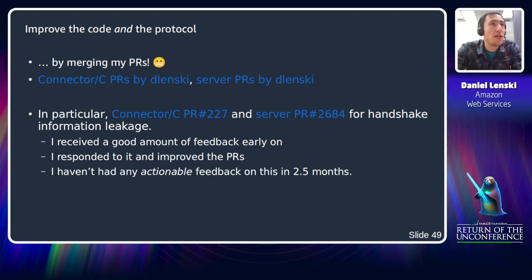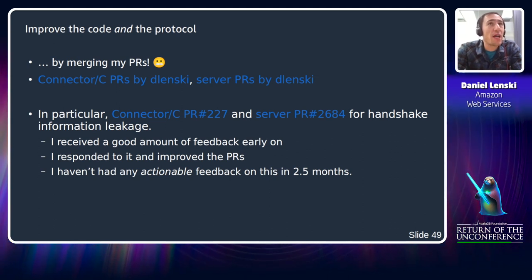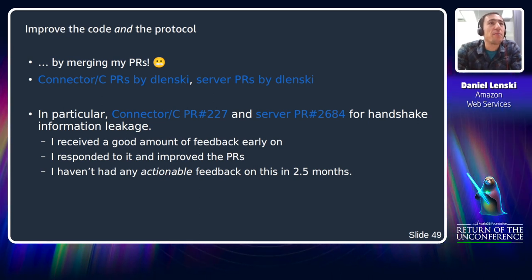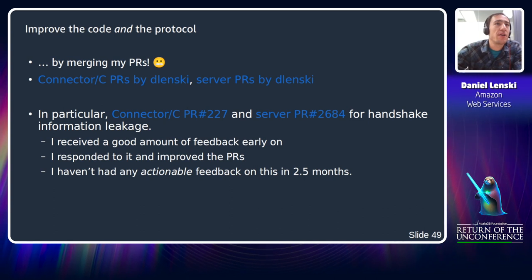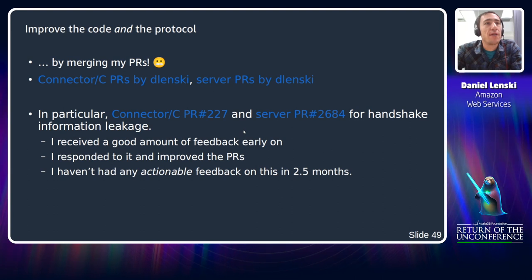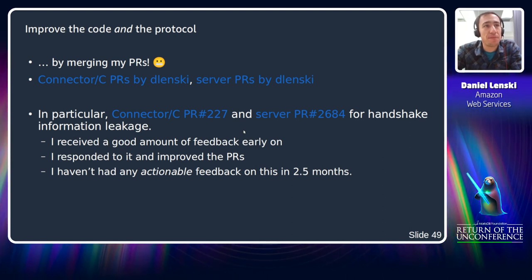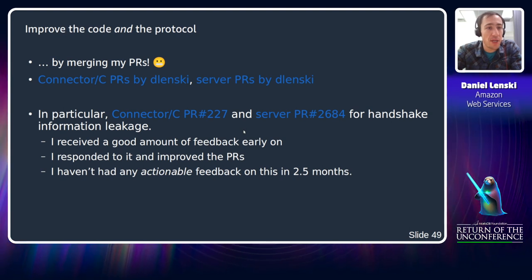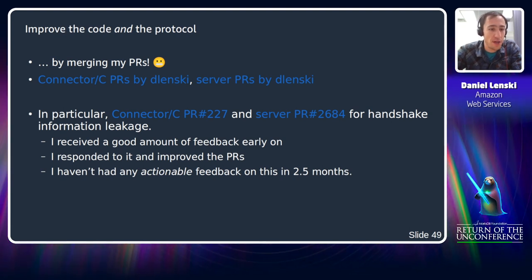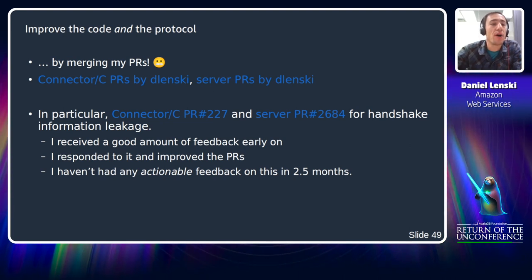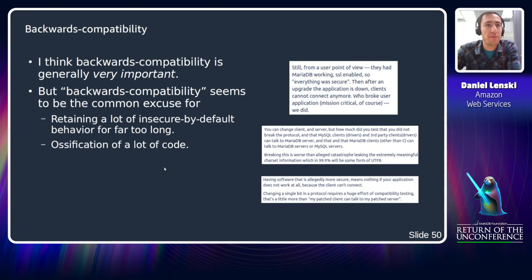One way to improve both the code and the protocol is by merging some of my PRs, or at least giving me concrete feedback on how to improve them. In particular, I'll highlight the pair of PRs for reducing information leakage in the handshake. I received good feedback on this early on, responded and improved the PRs, but I haven't had any actionable feedback or input in about two and a half months.